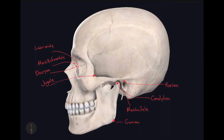This next landmark isn't specifically a point. A lot of craniometric points are at intersections between sutures or the most inferior point of a process, but this next one is not the case. It's a very small region called the pterion. It's located where the frontal, the sphenoid, the parietal, and the temporal bones come together — right here in this region. There's no single point where all four bones intersect, so this little region is called the pterion.